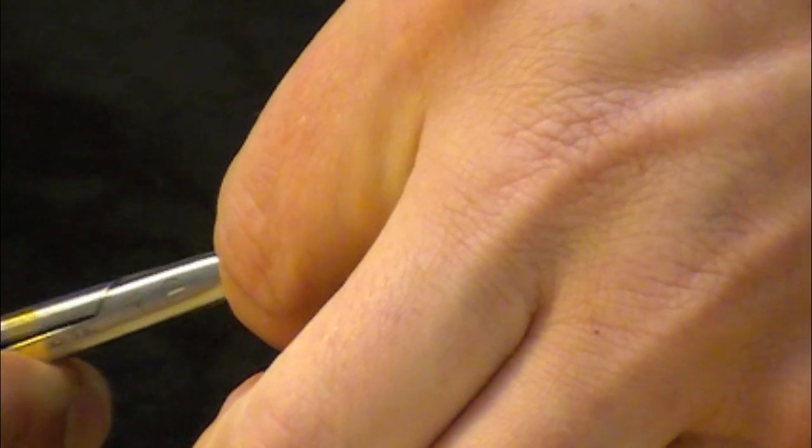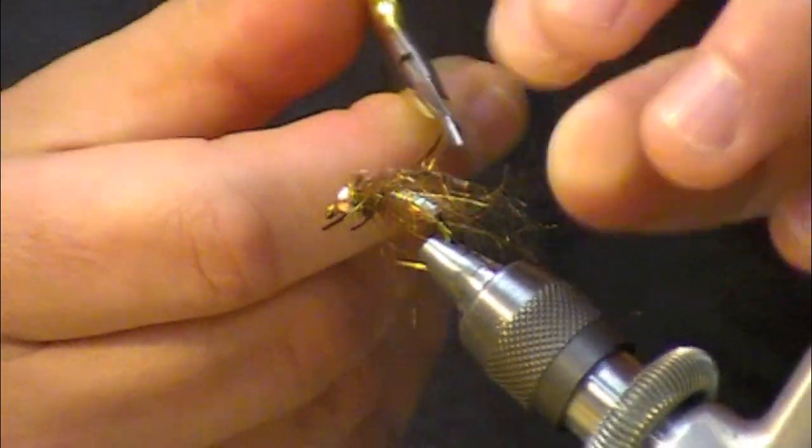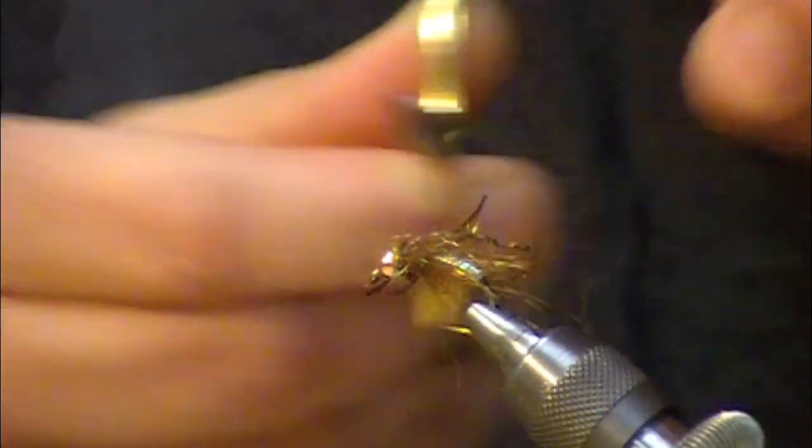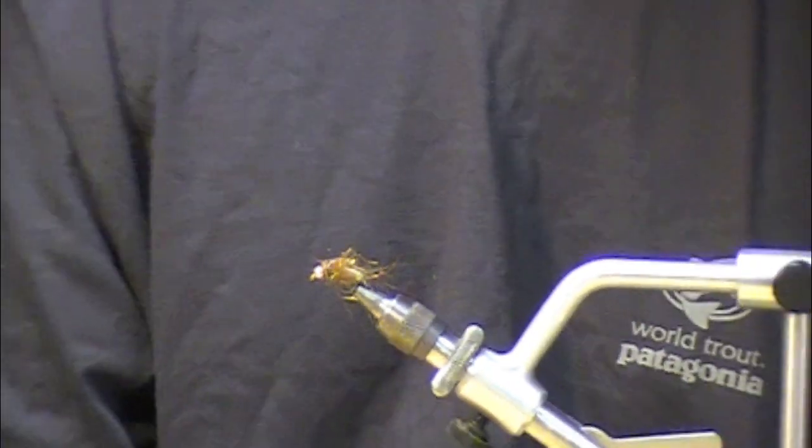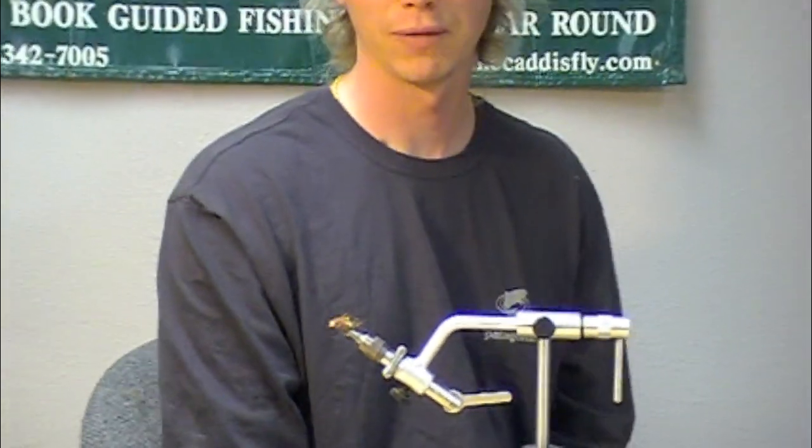The last thing we'll do is we'll just kind of snip those legs down so that they're proportionate. And there you have a UV Chewy Skin Mini Stone. One of my new favorites. Hope it's one of yours too.